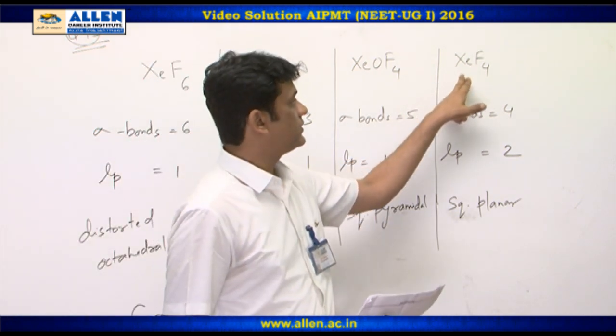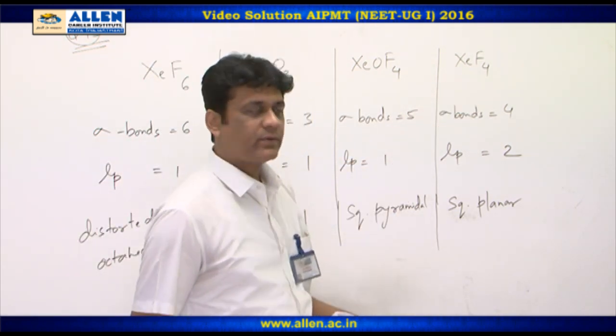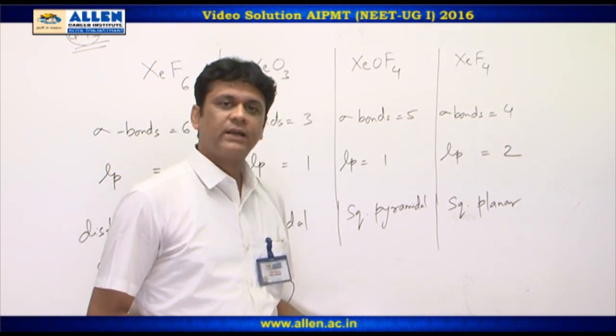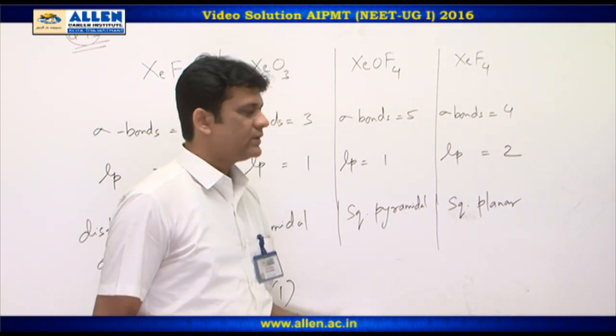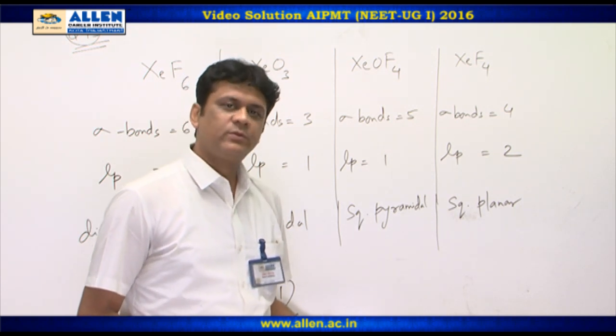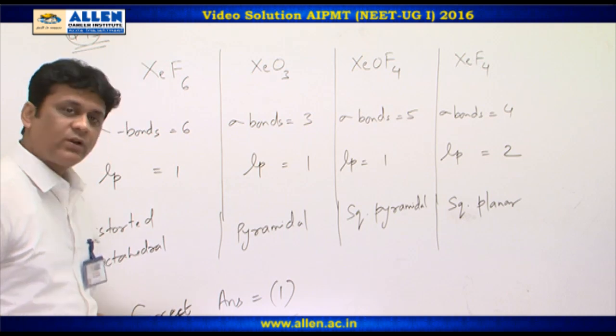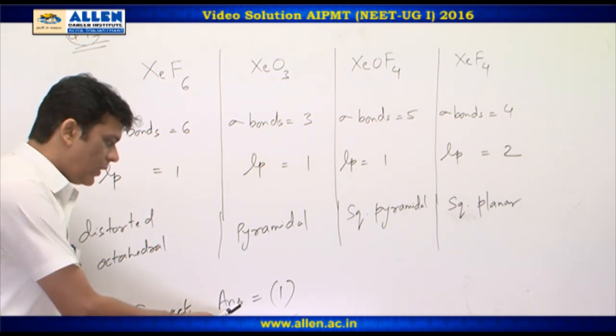And in the fourth molecule xenon tetrafluoride, the number of sigma bonds are 4 and the number of lone pairs on central atom are 2. So, according to VSEPR, the shape should be square planar. So, the correct answer from the given options is option first.